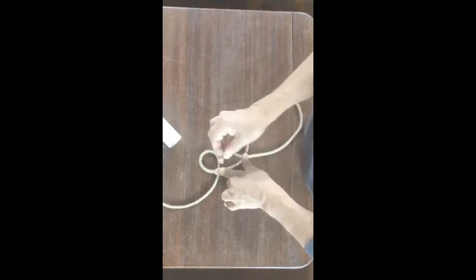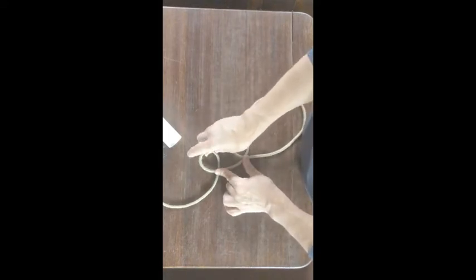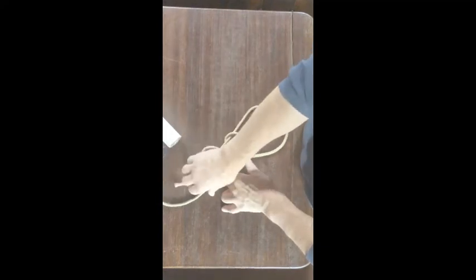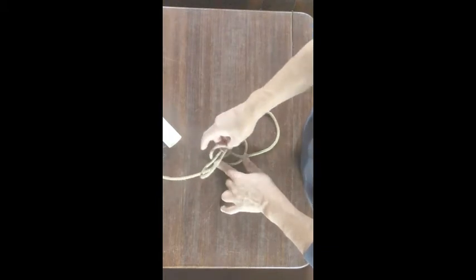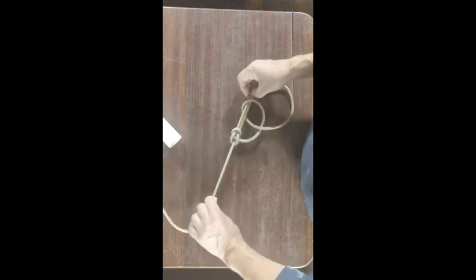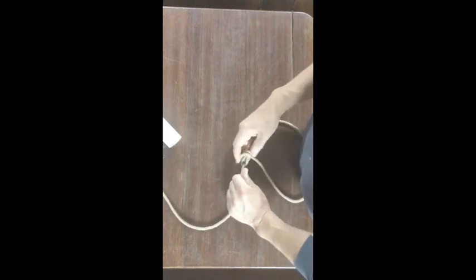The rabbit comes up through the first hole, then ducks down and comes up through the second hole. He goes round behind the tree and then he just follows his track back. So just follow where you came from, pull the knot up, it's a water bowline.